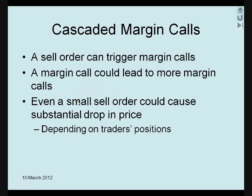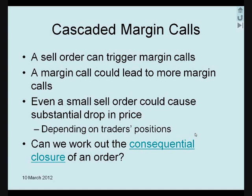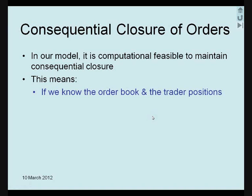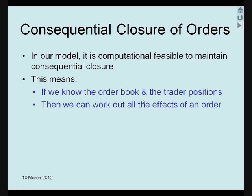Whether and when that will happen depends on the order book and the trader's positions. The question is, can we work out the eventual outcome of an order? That is, can we maintain consequential closure in our calculus? In some systems, maintaining consequential closure could be very costly. Nobody has worked out the consequential closure of e2 to e4 in chess, for example. Fortunately, in our model, it is computationally feasible to maintain consequential closure. This means, if we know the order book and the trader's positions, then we can work out the ultimate effects of an order.